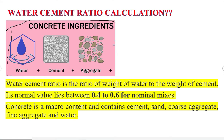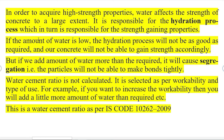For nominal mixes, concrete is a macro content and contains cement, sand, coarse aggregate, fine aggregate, and water. I want to discuss some theoretical aspects before the calculation of water-cement ratio. In order to acquire high strength properties, water affects the strength of concrete to a large extent. It is responsible for the hydration process, which in turn is responsible for the strength-gaining properties. If the amount of water is low, the hydration process will not be as good as required.